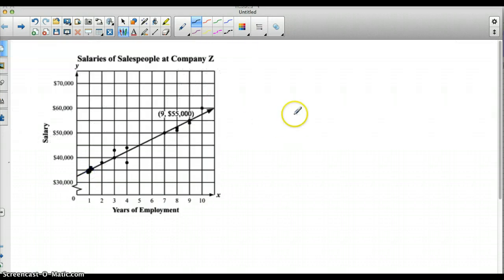So here would be a good one, where we would have 1, 35,000. And our second point that we could use looks like we could use here, which is 5 and 45,000.